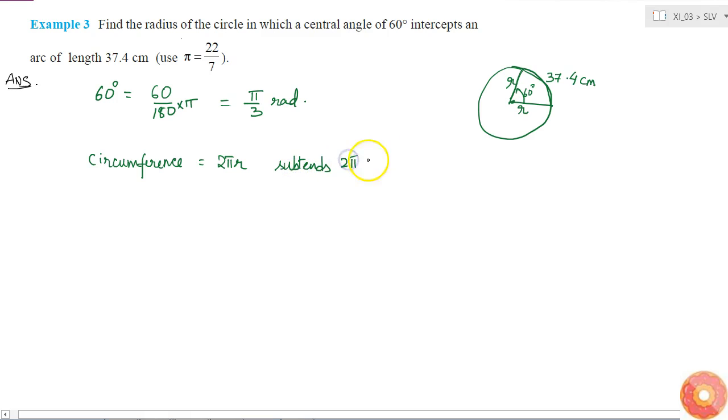So if an arc subtends an angle of pi by 3 radians, what will be its length? Length is equal to pi by 3 divided by 2 pi into 2 pi r. Because the length of the arc is directly proportional to the angle in radians, this will be equal to pi r by 3.